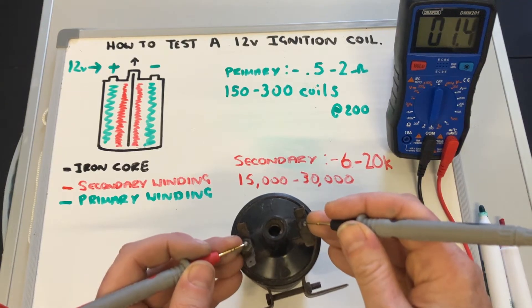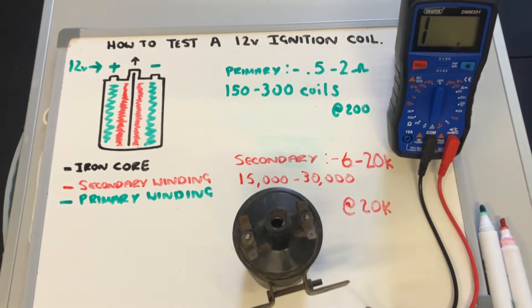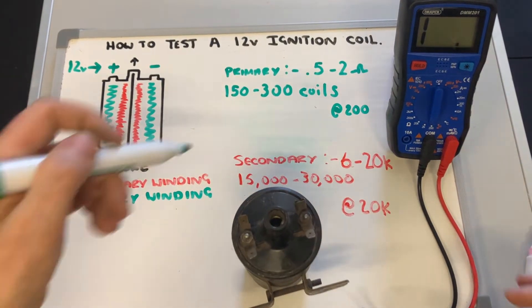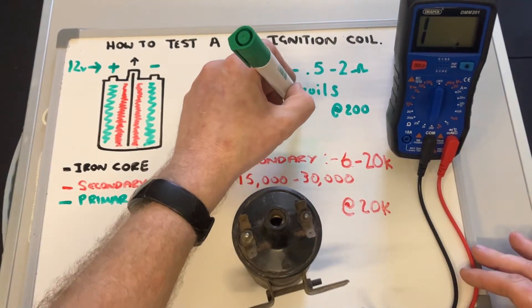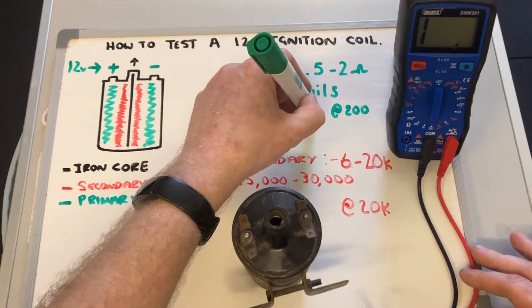And on this particular one, 1.4 ohms at 200. So again, 0.5 to 2 ohms, 1.4 ohms at 200—perfectly fine with that, well within spec.